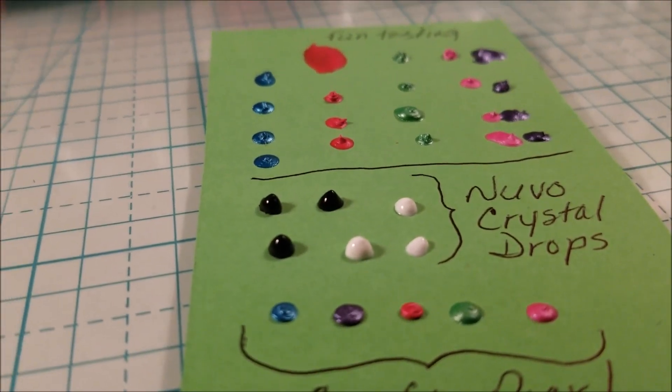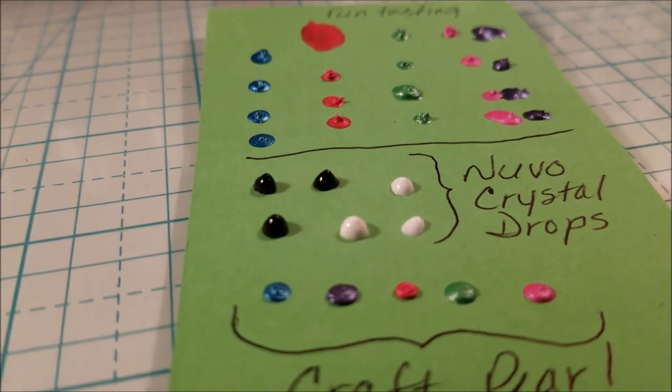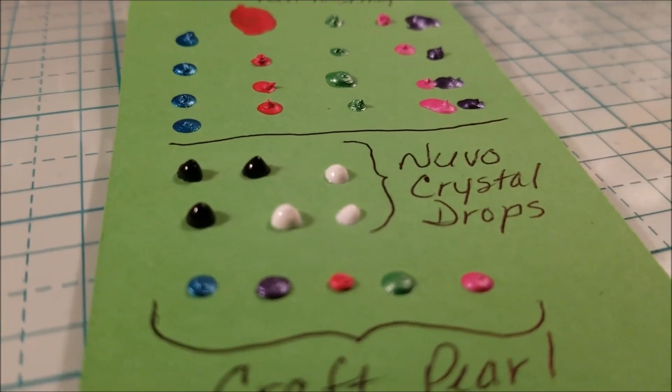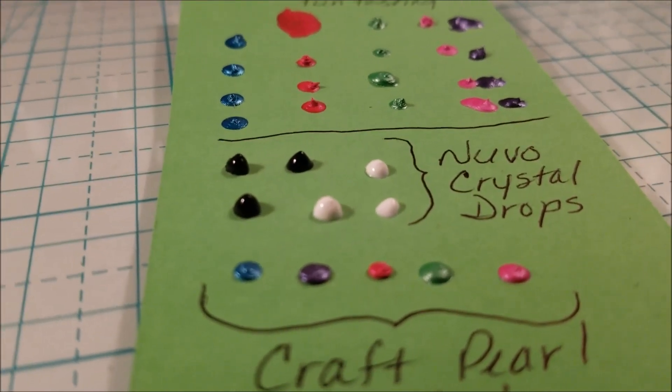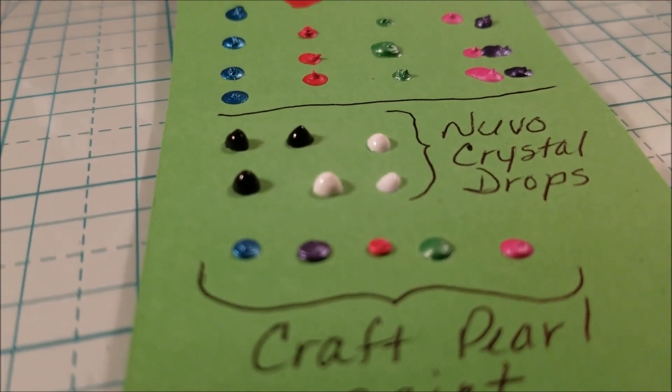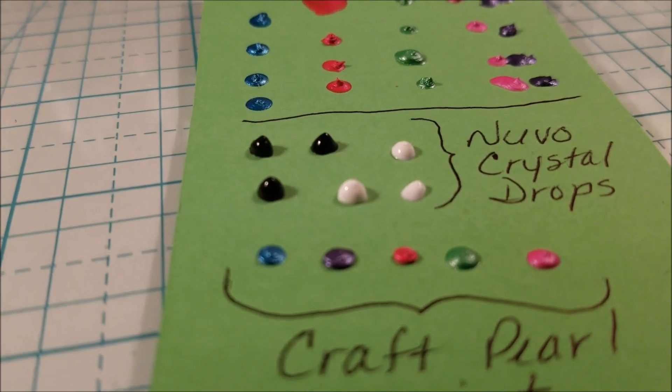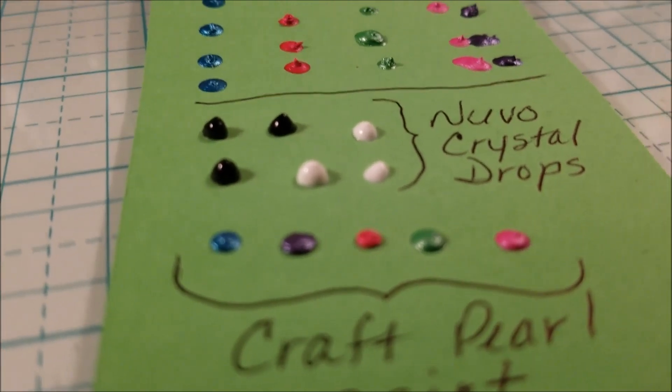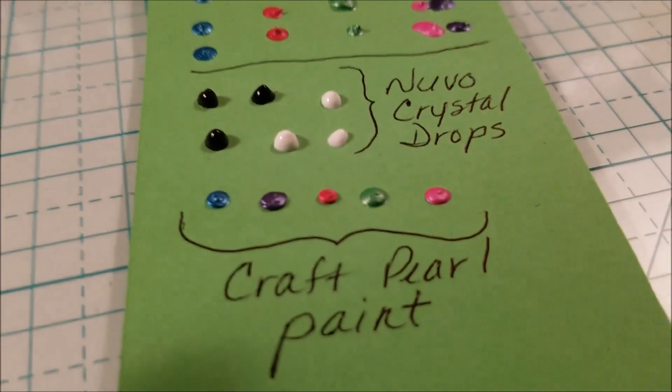I mean they are pretty colors and everything, it's just too bad they don't stay up like the Nouveau crystal drops. There must be an ingredient in there that keeps them puffy and hard, hardening quick. There must be some sort of hardening agent in there to do that.